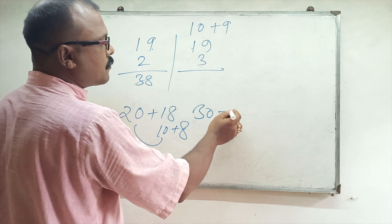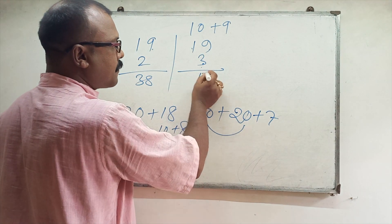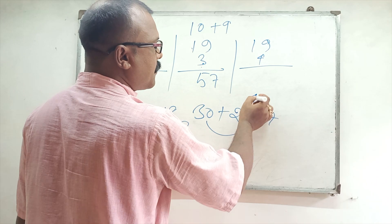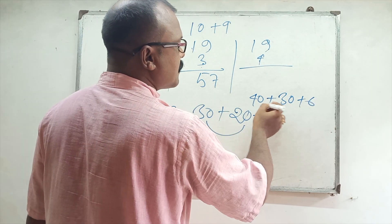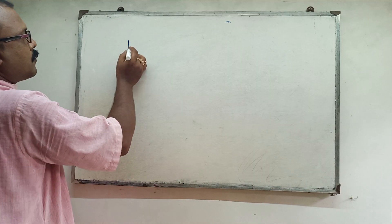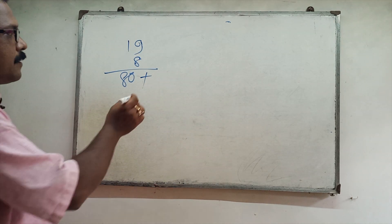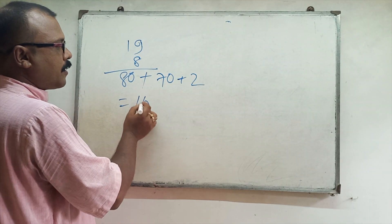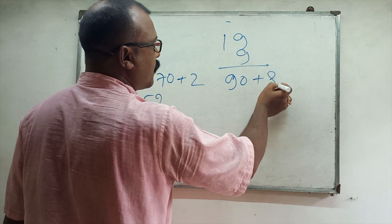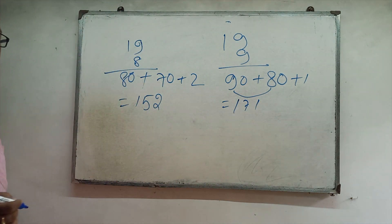19 threes: that gives you 27, so 57. 19 fours: 40 plus 36 is 76. 19 eights: 10 eights are 80, 9 eights are 72, so that equals 152. 19 nines: 90 plus 81, that is 171. So easy.